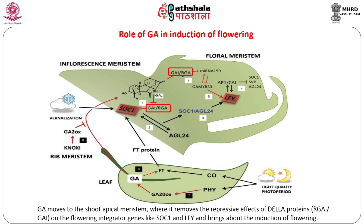Under inductive photoperiod conditions, phytochrome mediates expression of the key flowering integrator CONSTANS, which promotes the expression of FT. FT is the mobile signal that moves to the shoot apical meristem to induce flowering, as mentioned in the module on photoperiodism. Phytochrome is also known to induce expression of the GA biosynthesis gene GA20OX in the leaf, which results in increased GA concentration. GA is also known to move to the shoot apex like FT, where it activates transcription of the floral integrator SOC1 and the floral meristem gene LEAFY.